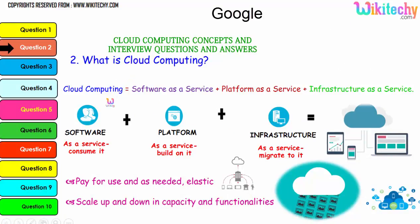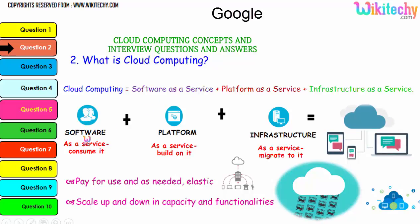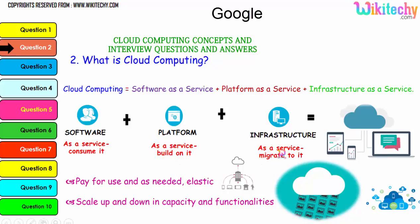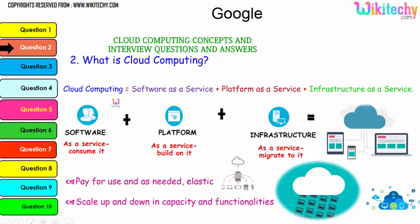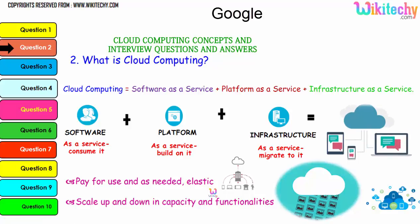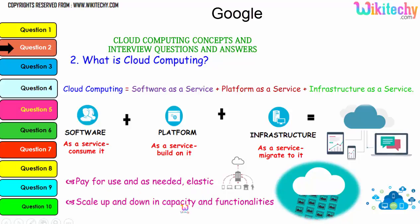Cloud computing consists of Software as a Service, where software is consumed as a service; Platform as a Service, where the platform is considered a service; and Infrastructure as a Service. The collaboration of software, platform, and infrastructure is referred to as cloud computing. The major advantage is the pay-for-use model — you pay for minimal storage if that's what you need, or pay for bigger storage as required — and it's elastic, meaning you can scale up and down capacity and functionality.